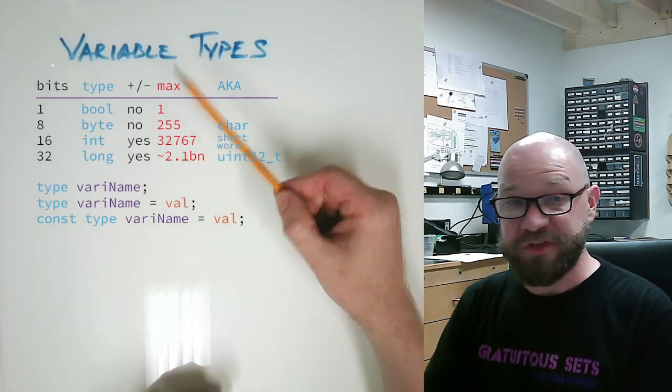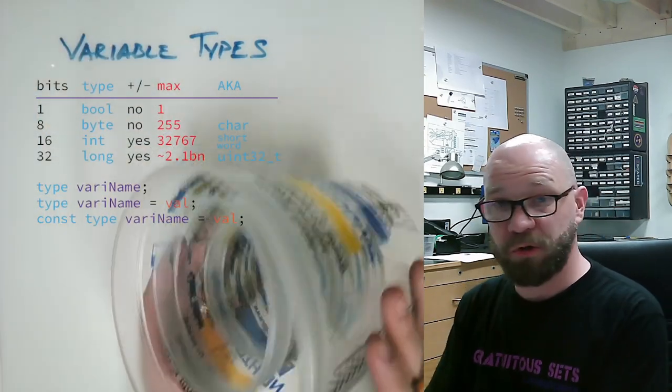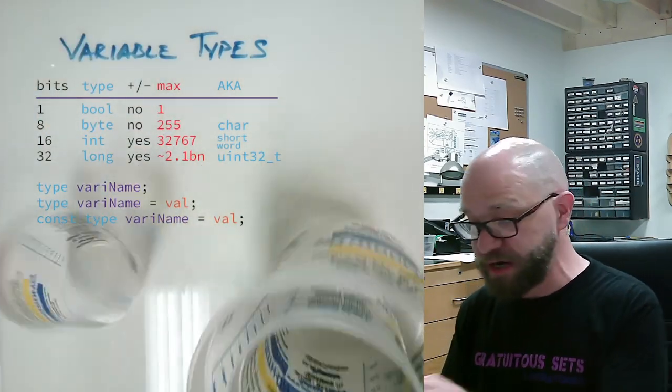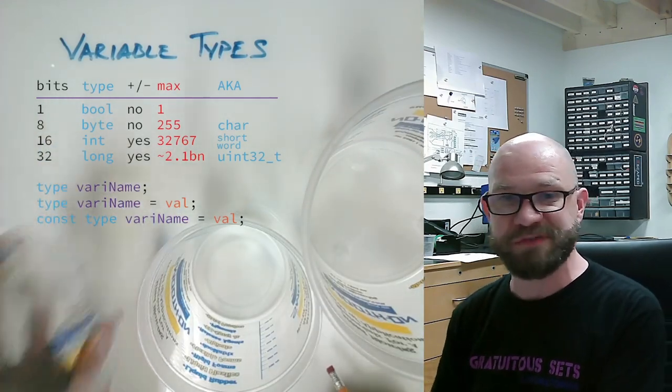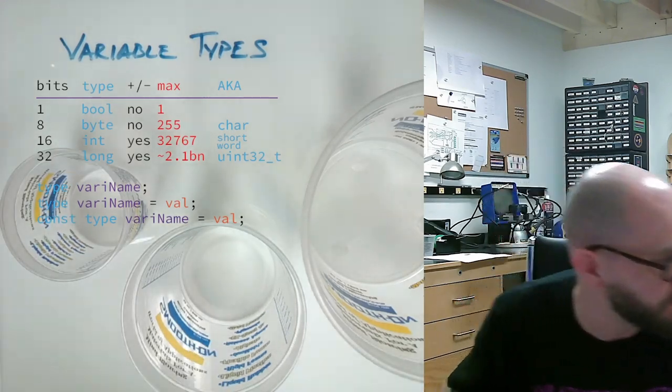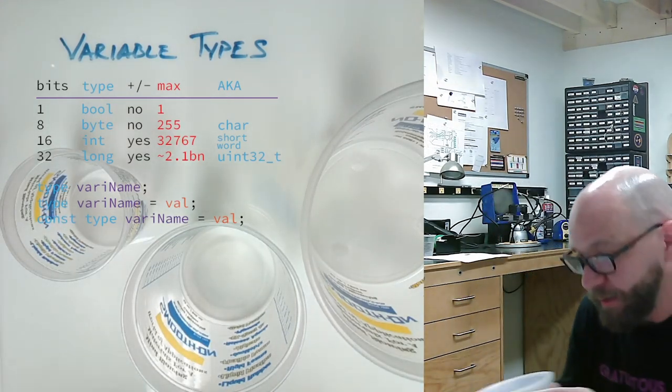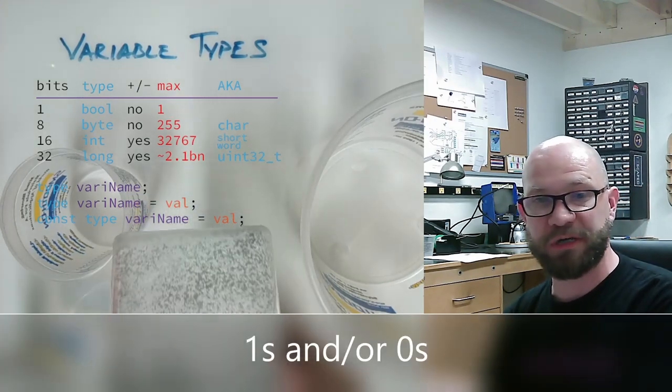You can think of these different variable sizes as buckets. We've got our whole different group of buckets right here. And anytime you are having the code deal with one of these buckets, it's going to deal with the whole thing. So we can kind of think of these as being full at all times, but either full of ones or full of zeros.